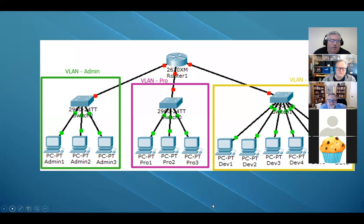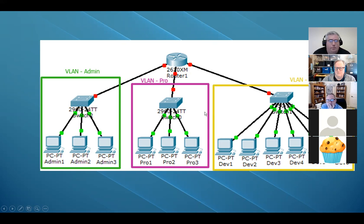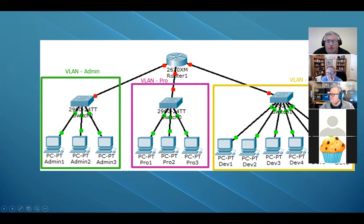Let's look at some graphics. Here we have a picture of a physically segmented network. The router has individual ports, each port has its own IP range — pretty much how we've been doing things in this class so far. We have the dev department, the production department, and the admins. What happens if one of our admins needs to move his office into the building that has production in it? We want him on the admin network, not the production network. The way you do it is to have VLANs set up.